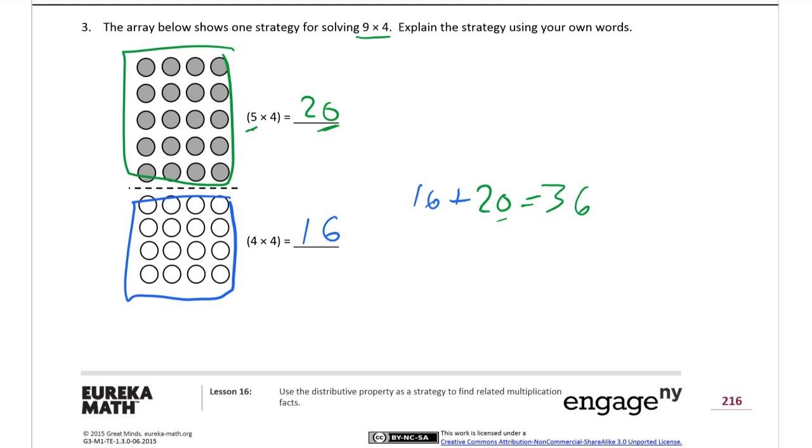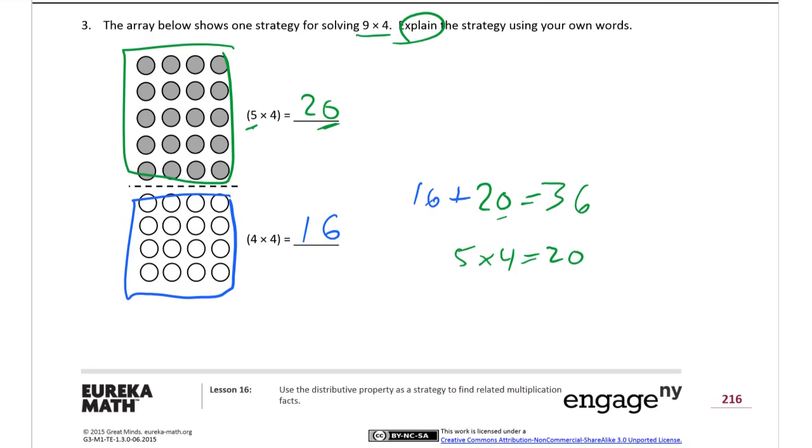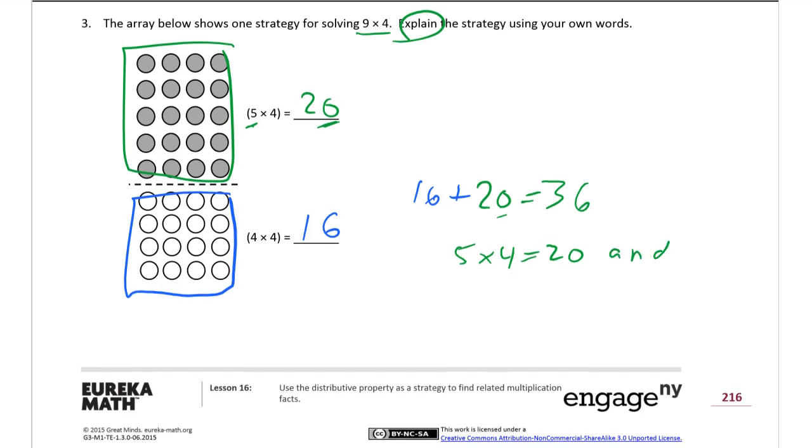So, we can say that we're just going to write down what we did. That's all explain has to be. It's just write down what we did. So, what do we do first? 5 times 4 equals 20.